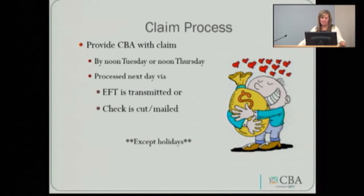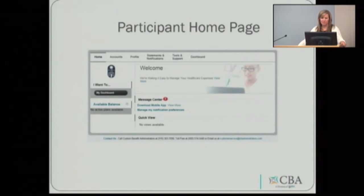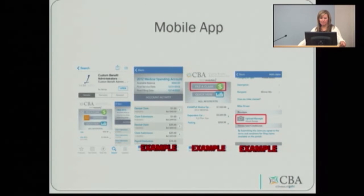CBA processes claims daily. If we receive your claim by noon on Tuesday or noon on Thursday, we'll process it for the next reimbursement day — which is Wednesdays and Fridays — and we'll either transmit or send your check. Here's a quick example of the homepage where you can manage your personal benefit with CBA. It has a quick online claim filing button right there on the homepage. We also have a mobile app where you can file your claim directly on your smartphone and take a picture of that documentation to send to us.